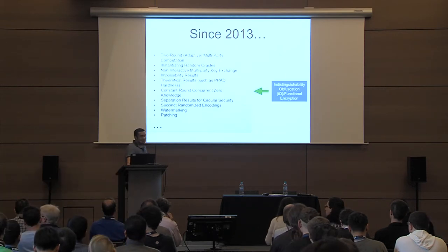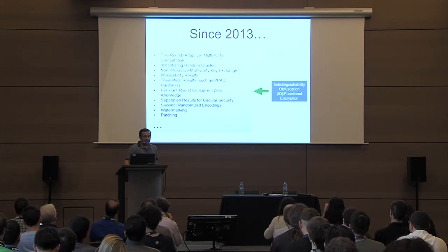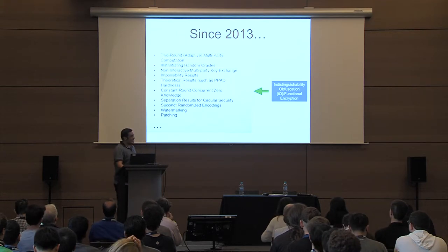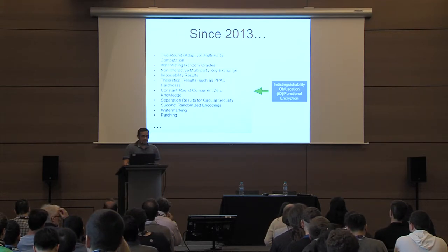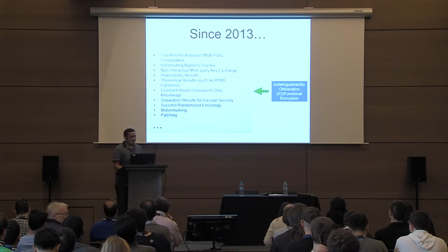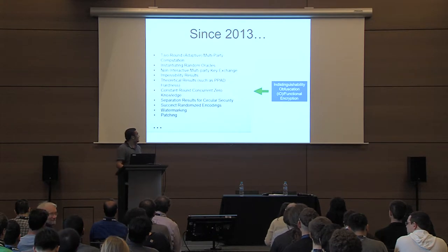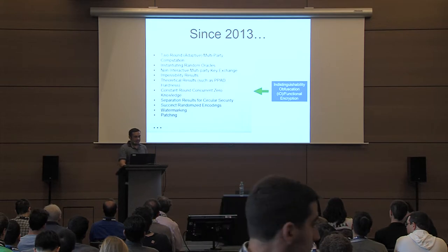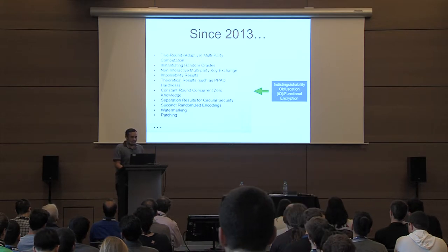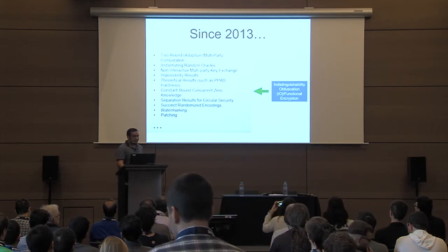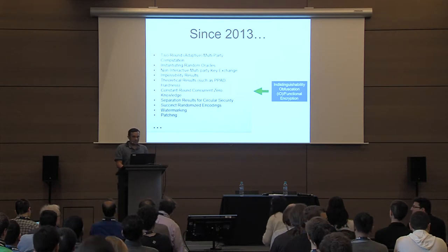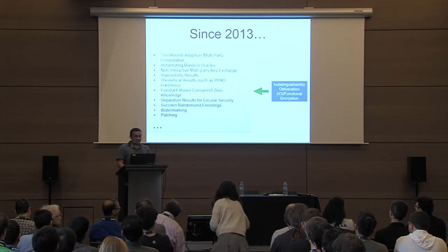Since 2013 there have been a lot of magical results in cryptography such as two-round MPC, replacing random oracles, non-interactive multi-party key exchange, and establishing hardness for PPAD. All these results have been made possible due to indistinguishability obfuscation or function encryption.